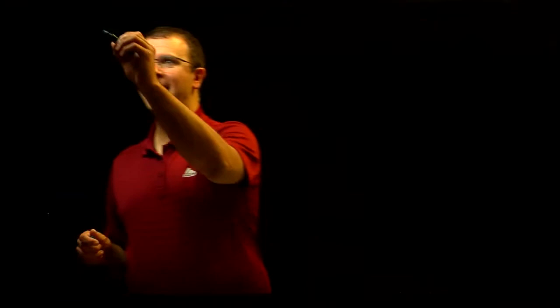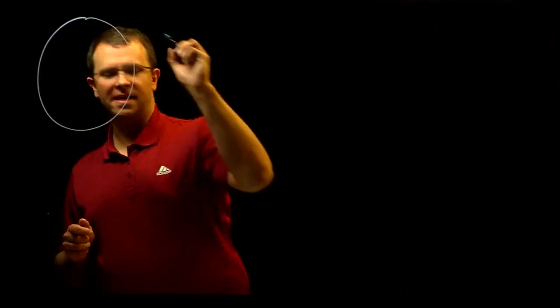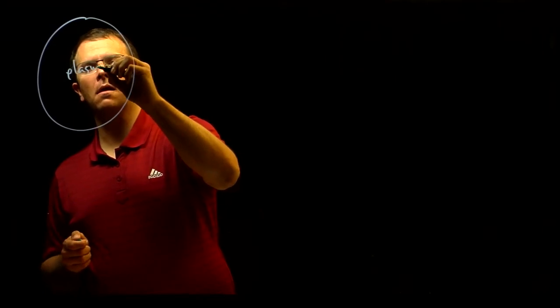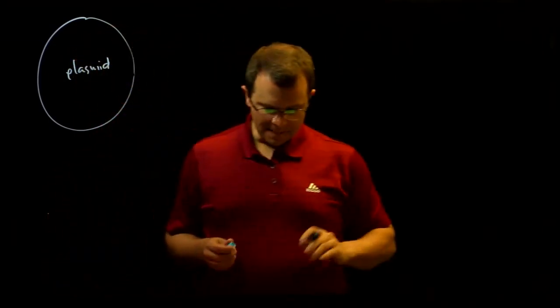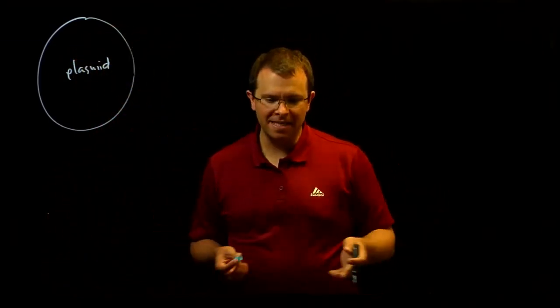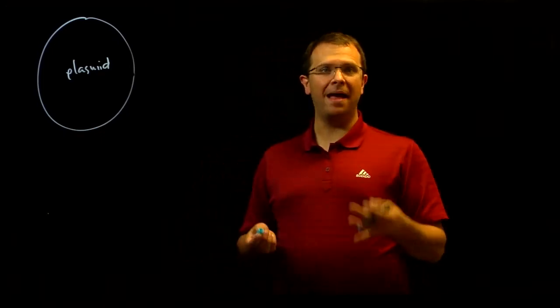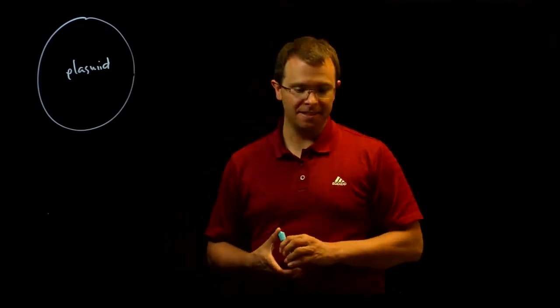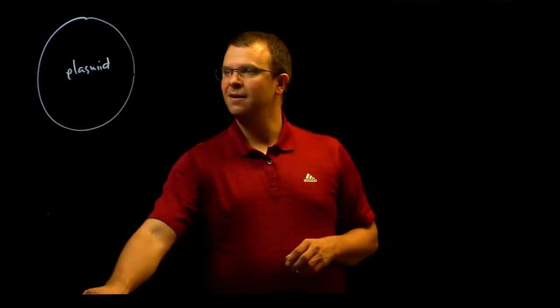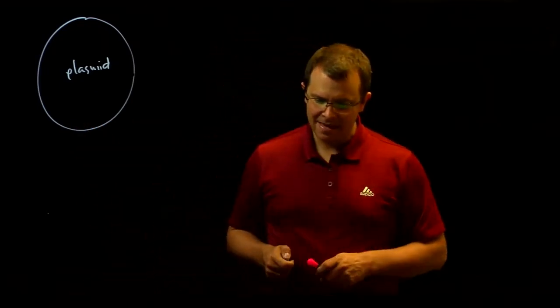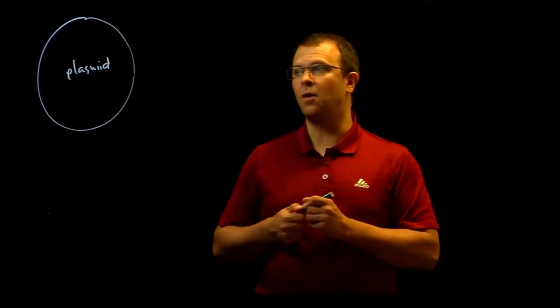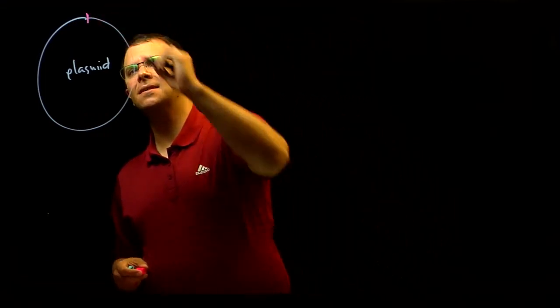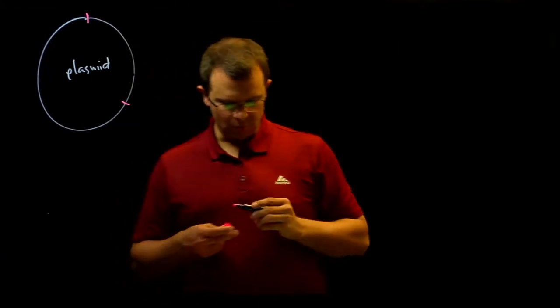For example, assume I have a circular piece of DNA called a plasmid. Plasmids are often found in bacteria, they replicate independently of the bacterial chromosome, and they often carry antibiotic resistance genes. Now imagine that this plasmid has two ECO-R1 restriction sites, one here and one here.